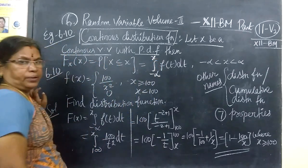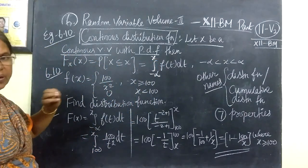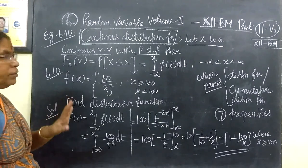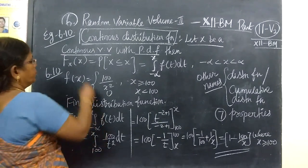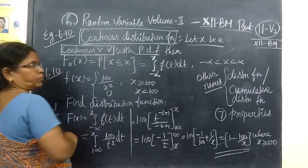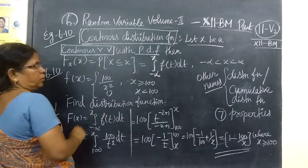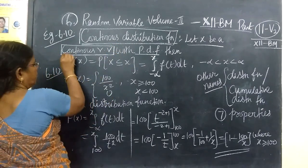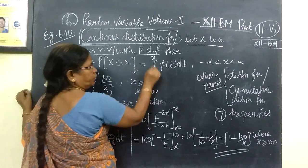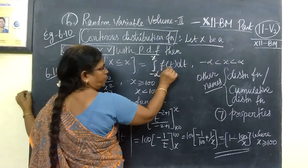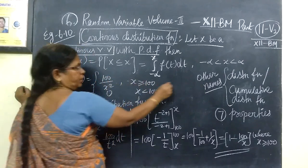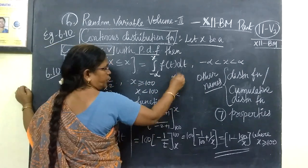The probability function is a different type. This is the definition of continuous random variable and the definition of continuous distribution function. In the definition, the integral runs from minus infinity to infinity.